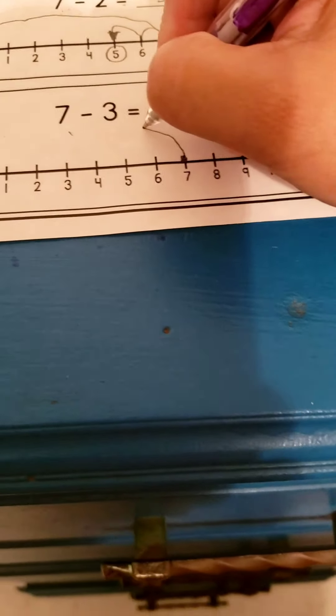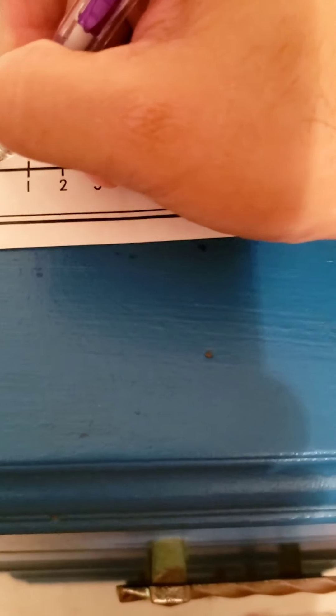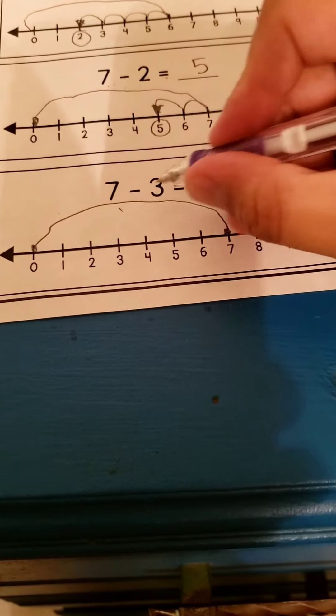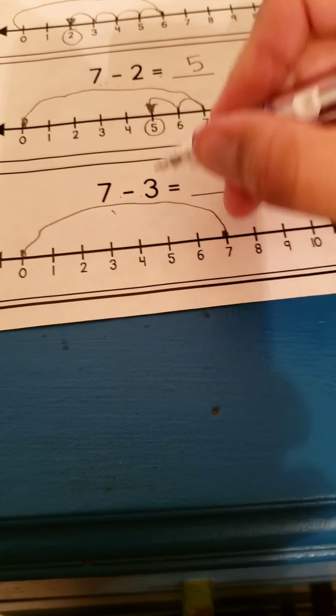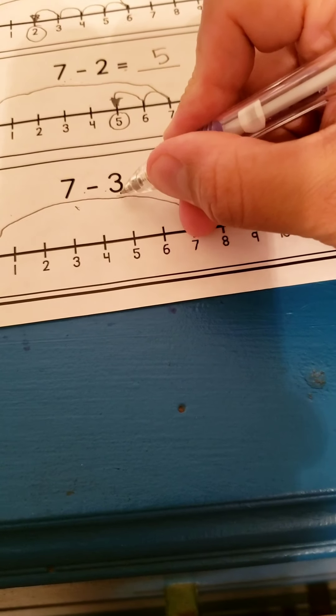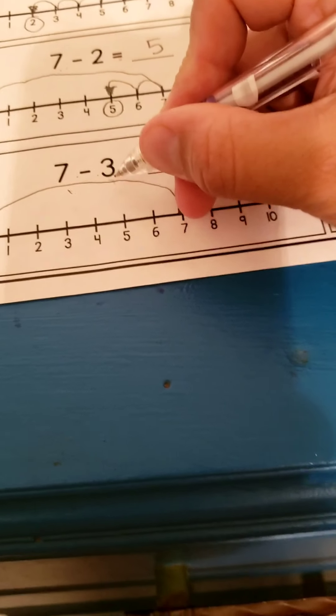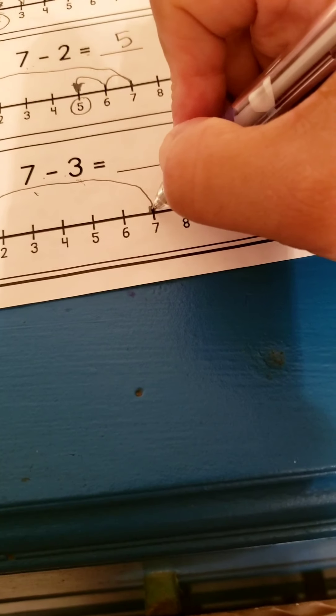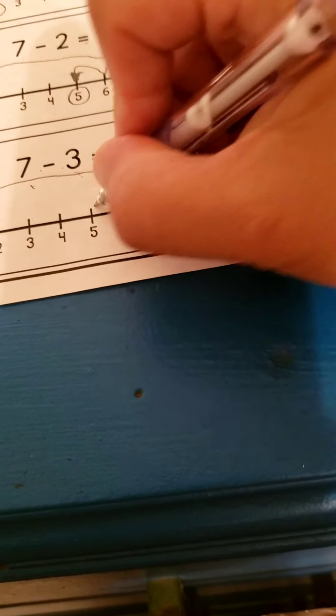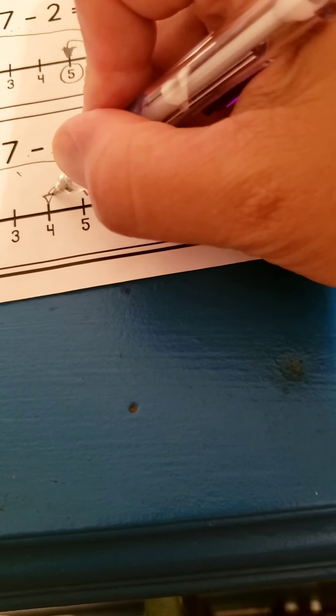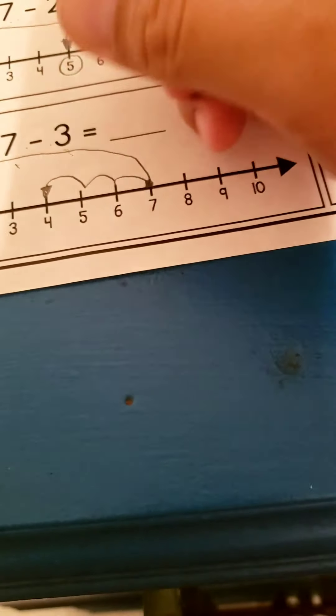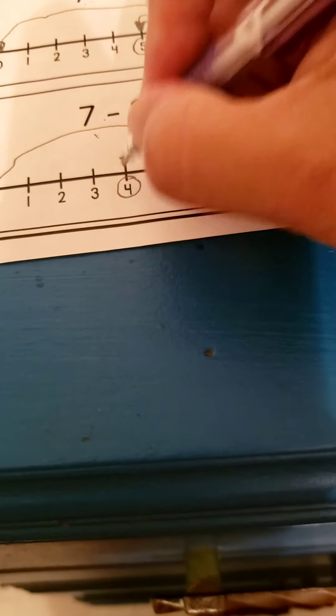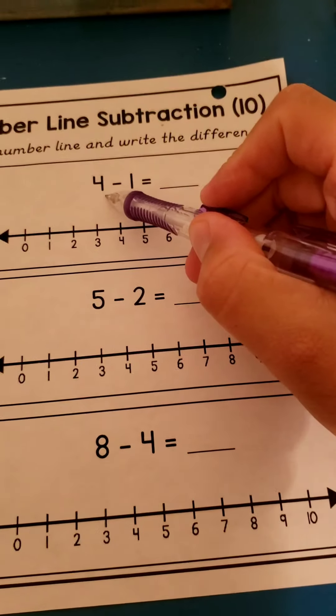You're subtracting, so you have to go all the way to zero. Show me you're subtracting. So back to seven minus three, I have to go three spaces to the left: one, two, three. Here's my arrow. That's where I landed. Four.